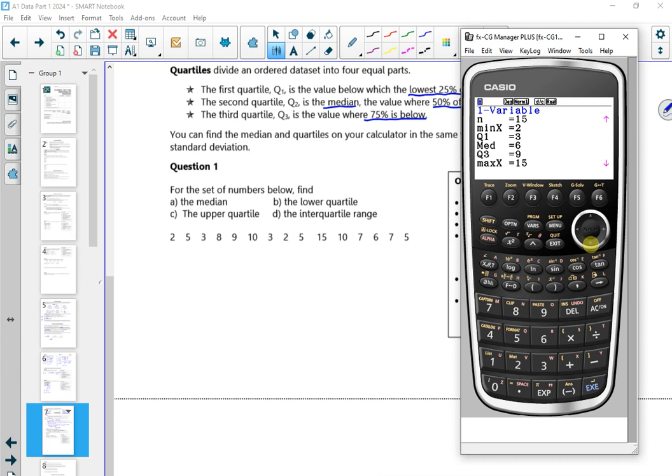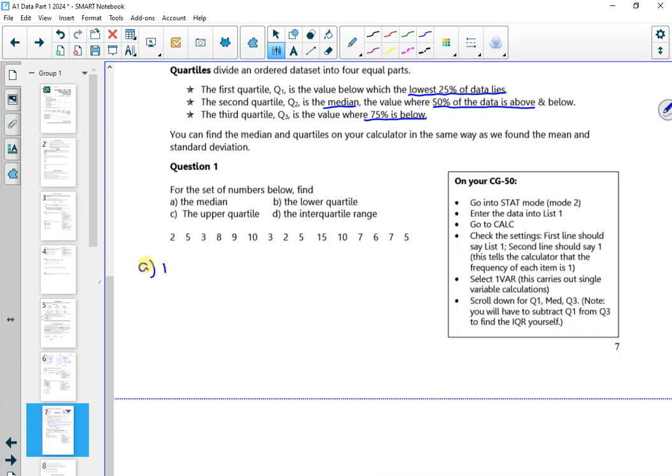So three, six, nine in that order. So my median is six. My lower quartile is three. My upper quartile is nine. So my interquartile range, my middle 50%. So my interquartile range is six.